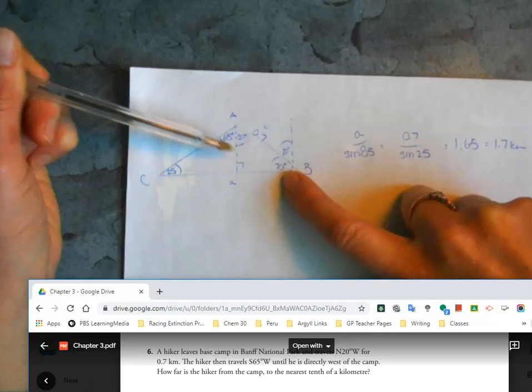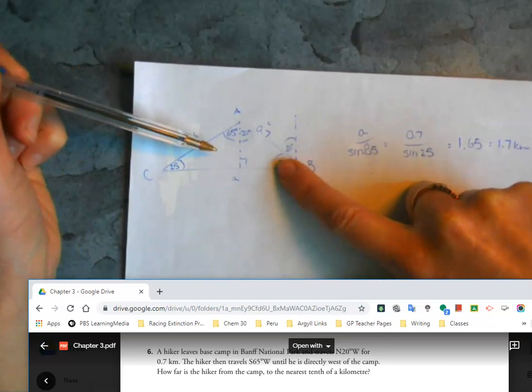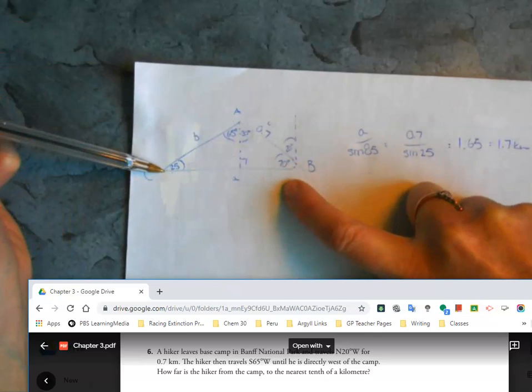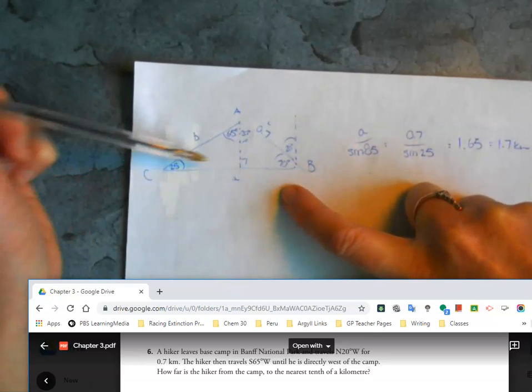So I can say, okay well if this is a line that's going to connect with this bottom east-west line and this going north-south, then I know there's going to be a 90 degree angle there.